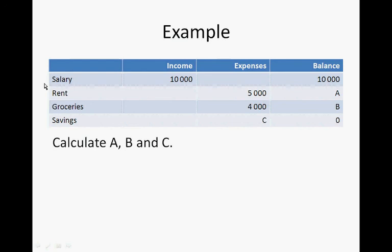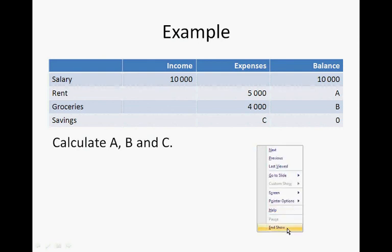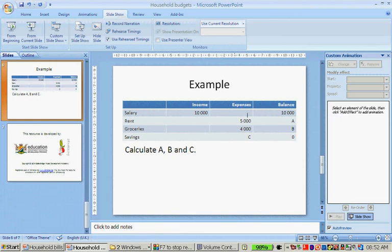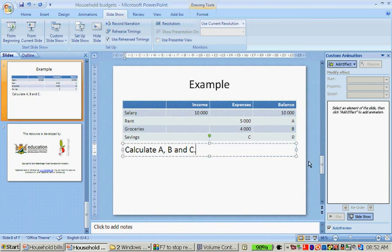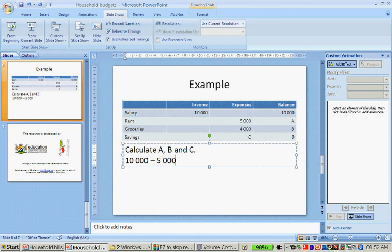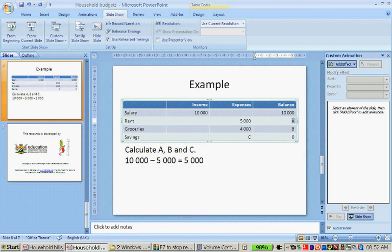Now the question is: this is the salary table and we have to calculate A, B, C, and D. To calculate A, we take 10,000 and subtract 5,000 from that, which is equal to 5,000 rand. So the amount for A is 5,000 rand.